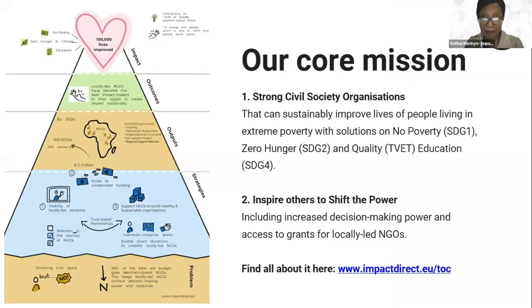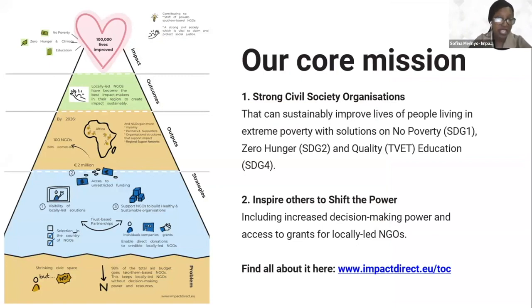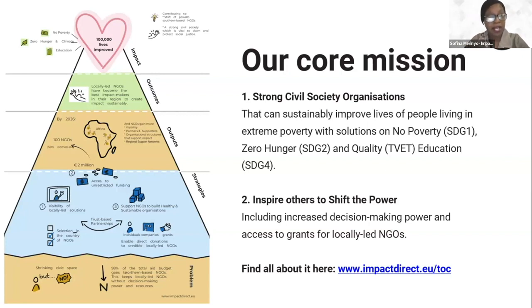This is our Impact Direct theory of change — I believe you've all interacted with this. Same concept: it starts with the problem, looks at the strategies, looks at the outputs, the outcomes, the impact. In the strategies, you're able to see visibility of locally-led solutions, access to unrestricted funding, and support for NGOs to build healthy and sustainable organizations. Eventually, our impact is to have 1,000 lives improved, working with SDG 1, 2, and 4 — no poverty, zero hunger, and quality education.